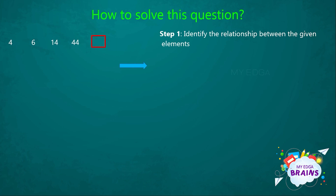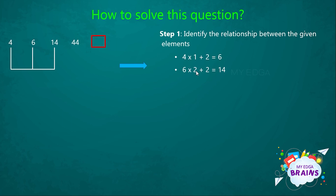So let's check that. We can take the first two elements, that is 4 and 6. When we multiply 4 with 1, we get 4. But our second element is 6. So in order to get 6, we have to add plus 2 to 4. That is, 4 × 1 = 4, plus 2 gives 6. Similarly, taking the second and third elements, 6 and 14: when we multiply 6 with 2, we get 12. In order to get 14, we add plus 2. That is, 6 × 2 = 12, plus 2 gives 14.